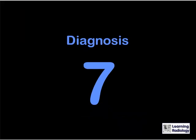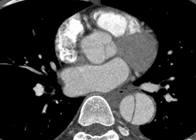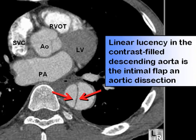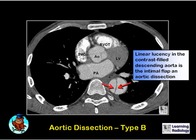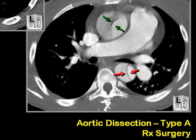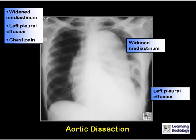Why does this 63-year-old man have chest pain? This is a single image from a contrast-enhanced CT scan of the chest. There is a thin lucency in the contrast-filled descending aorta, which represents the intimal flap of an aortic dissection — a type B dissection. Type B dissections spare the ascending aorta and are usually treated medically, while type A dissections involve the ascending aorta and are usually treated surgically. On conventional radiography, if you see a widened mediastinum and a left pleural effusion in a patient complaining of chest pain, you should be worried about aortic dissection.